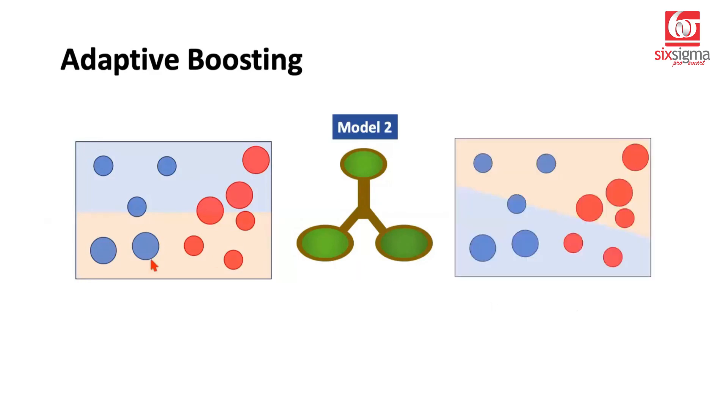Model 2 has been told to give emphasis to these points. So it decides a line like this where these points which were earlier marked as errors have been classified properly to a large extent or maybe completely here.